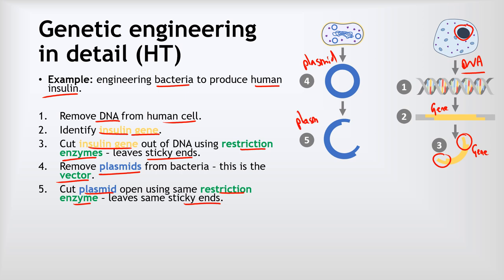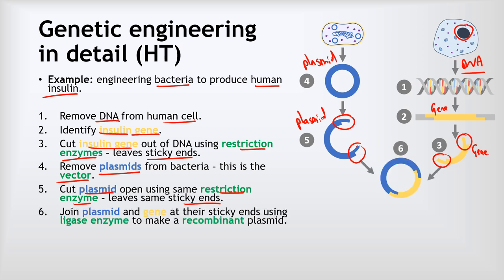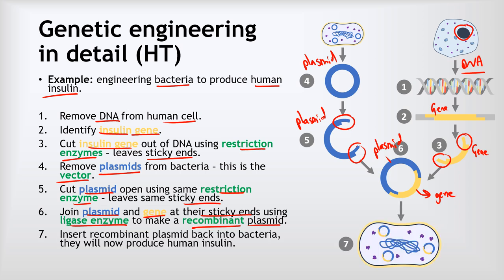Now we look at the bacteria. We get the bacteria we want to engineer and remove some plasmids — these will be our vector. The plasmid is shown in blue. Before inserting the gene, we cut the plasmid open using restriction enzymes, again leaving sticky ends. This allows us to join the plasmid and the gene via their sticky ends using ligase enzymes. The blue section is the plasmid DNA and the yellow section is the gene DNA joined together. Once joined, we call this a recombinant plasmid — recombinant meaning they've been recombined.